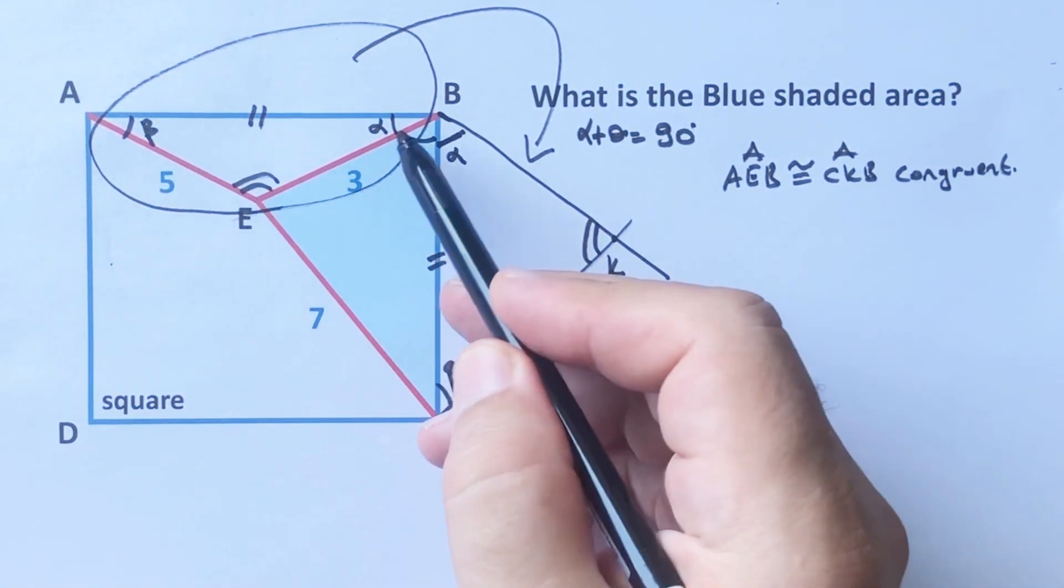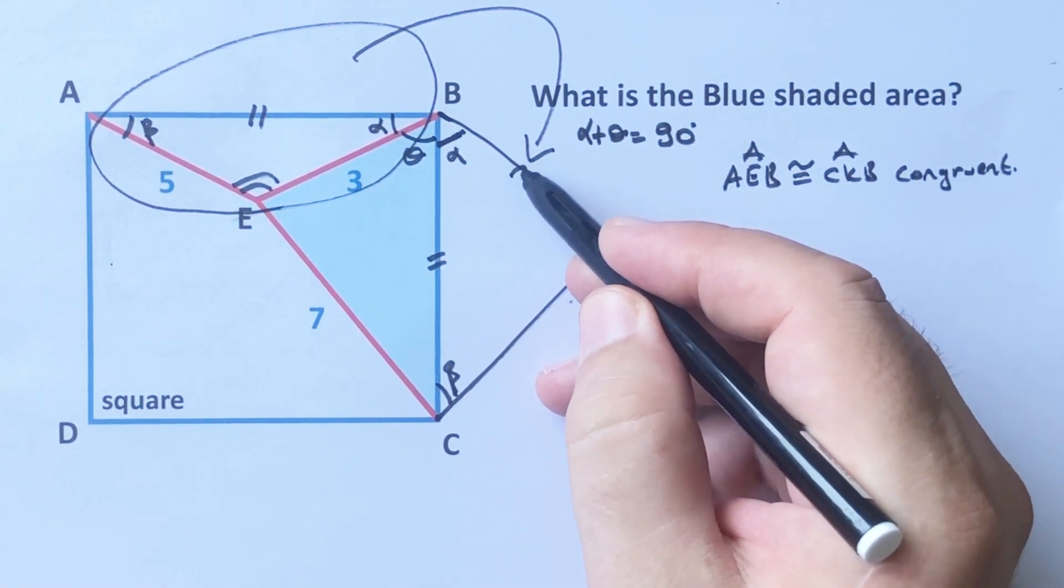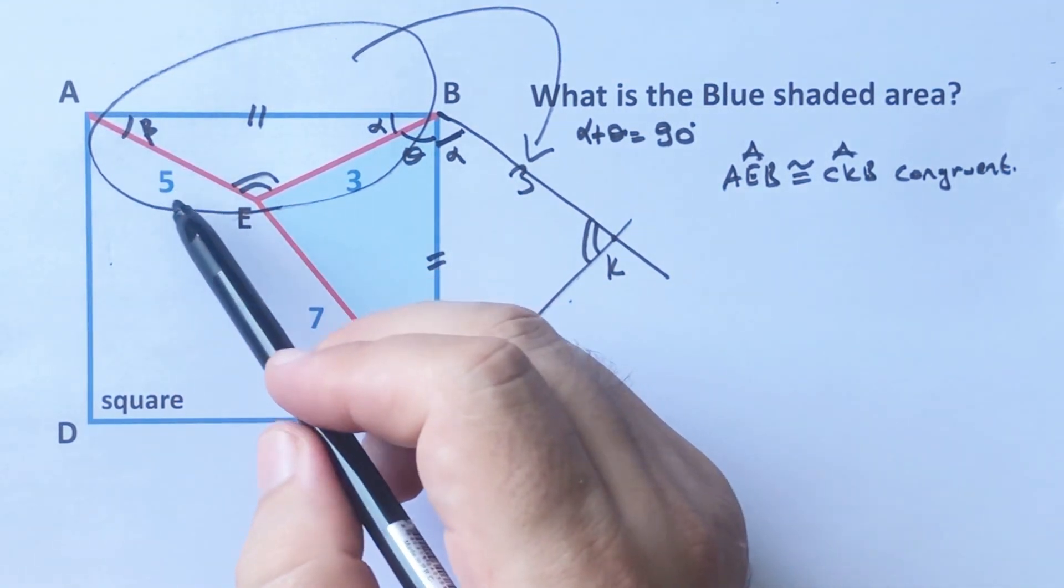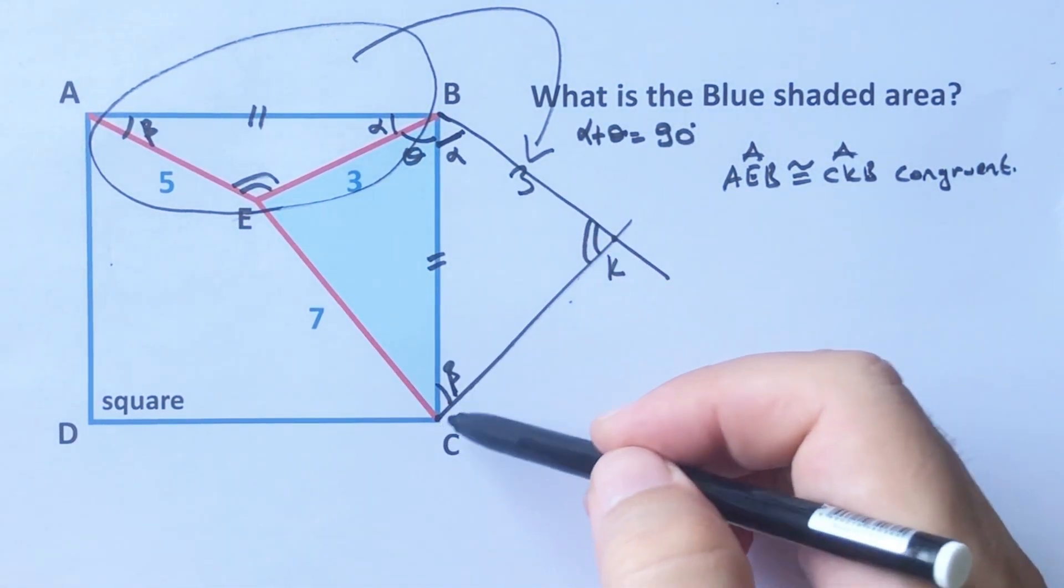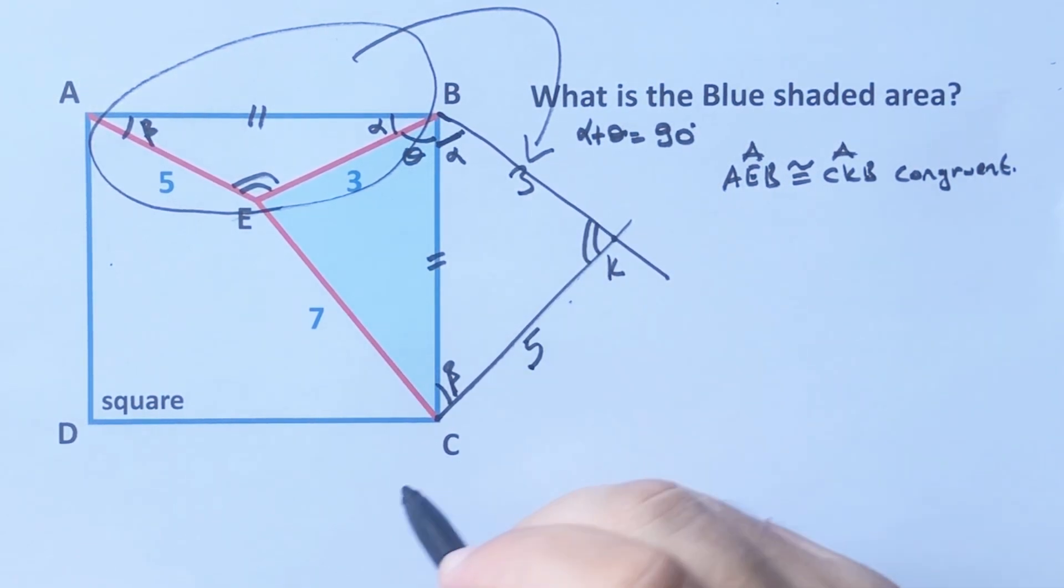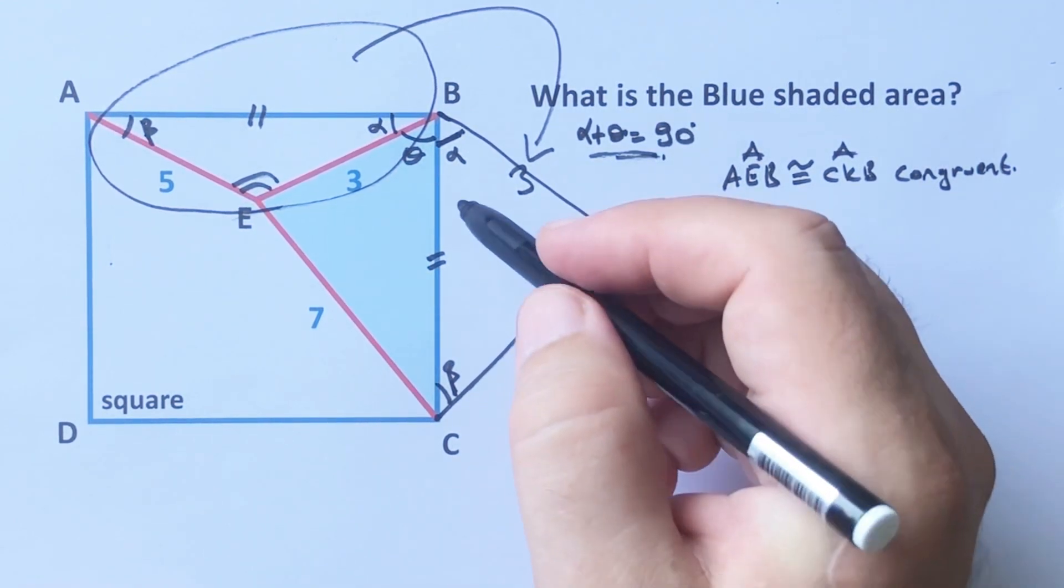That means opposite of the beta equals 3 units. Opposite of the beta must be equal 3 units. And opposite of the alpha is 5 units, that means here must be 5 units.